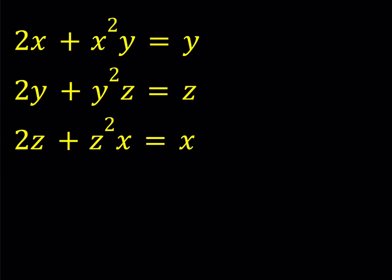This system can be simplified by solving each variable in each equation. For example, consider the first equation, 2x plus x²y equals y. We can solve this equation for y. The reason we don't go for x is because x is quadratic and y is linear, so it makes more sense.